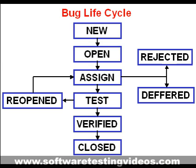In software development process, the bug has a life cycle. The bug should go through the life cycle to be closed. A specific life cycle ensures that the process is standardized. The bug attains different states in the life cycle.